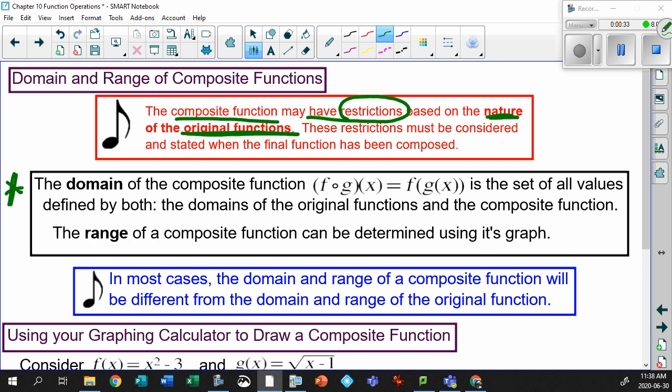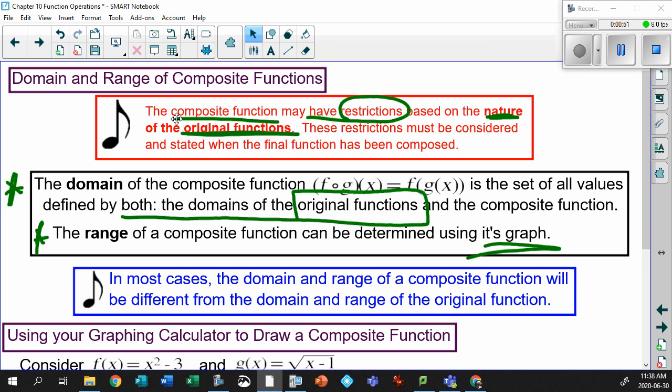So that's what it says right here. The domain of the composite function is a set of all values defined by both domains of the original function. The range can be determined using the graph. It seems like we're always going back to this idea of graphing it and figuring out the range. That's got to be the easiest way to do it.